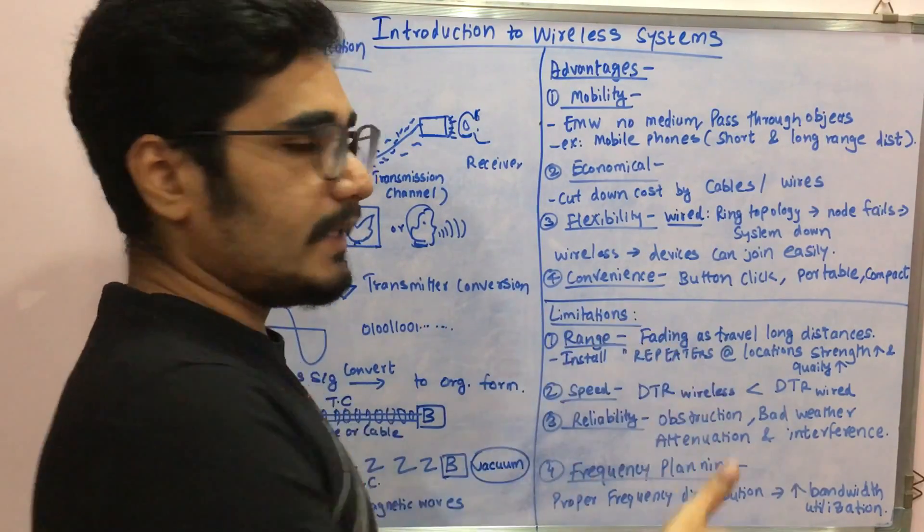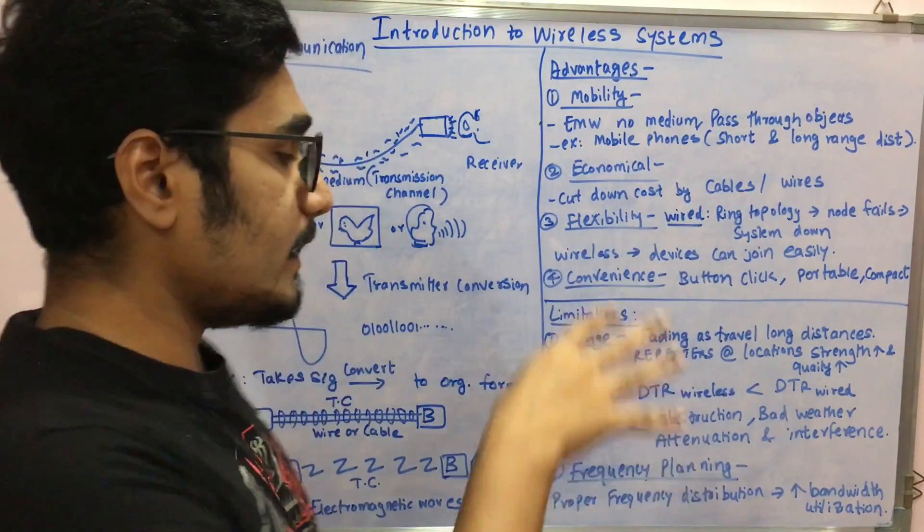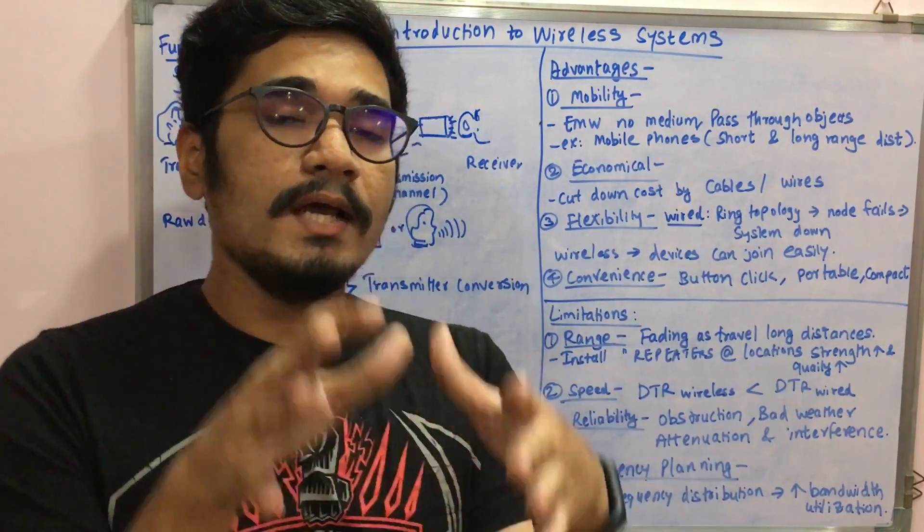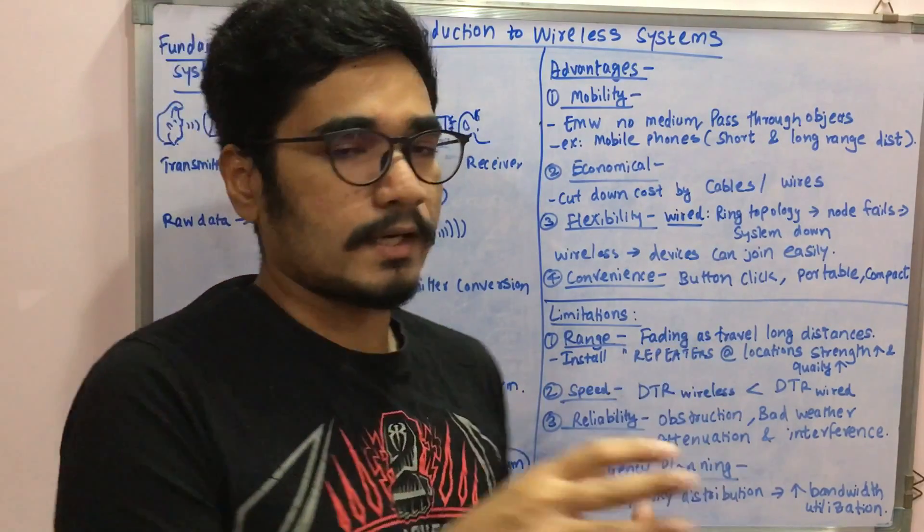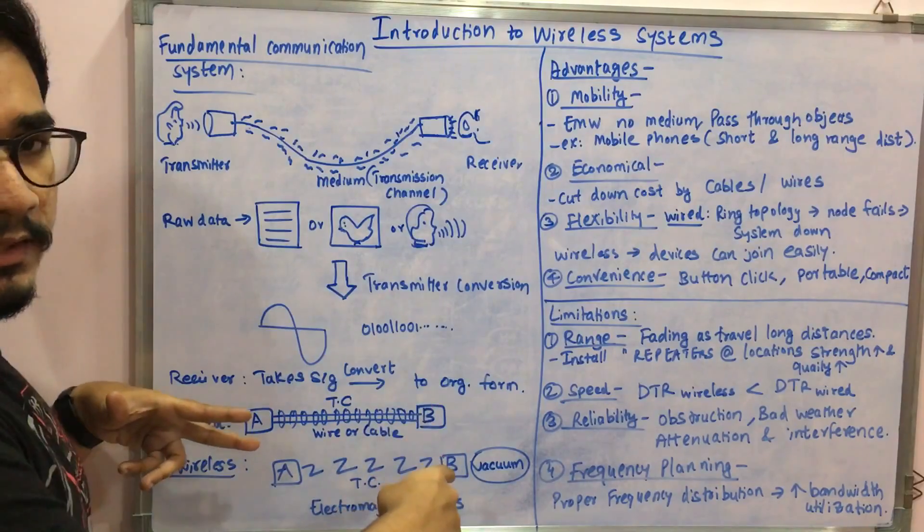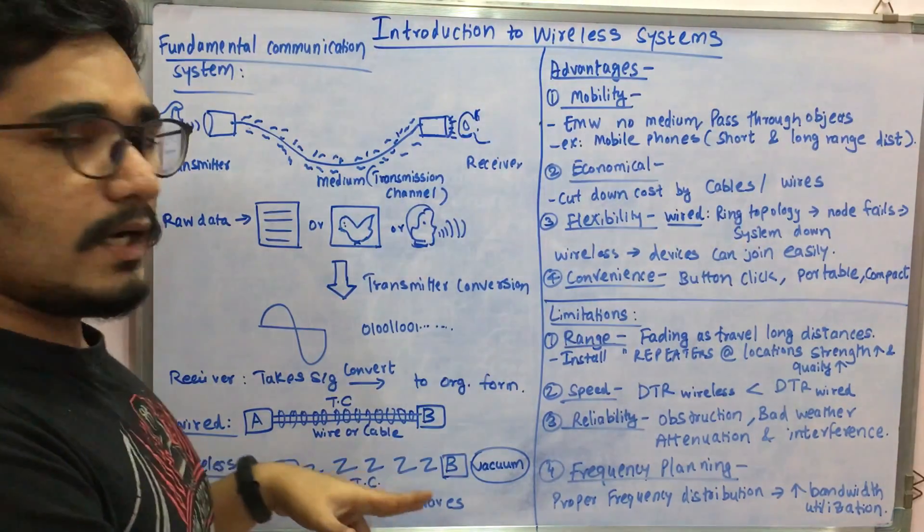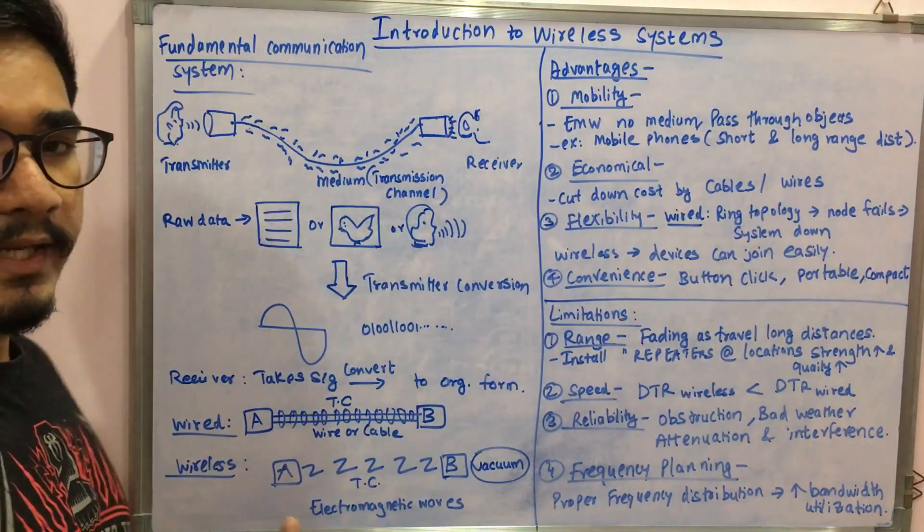Second is the speed. DTR stands for data transmission rate. I generally observe that the data transmission rate of wireless systems is very low as compared to data transmission of wired systems. The data transmission with wired setup is much higher than wireless. Obviously some kind of data loss and fading happens, so you might get a lower rate of data transfer.